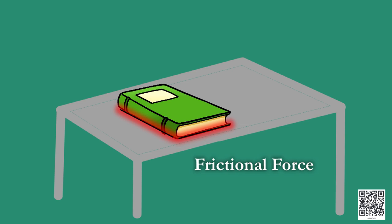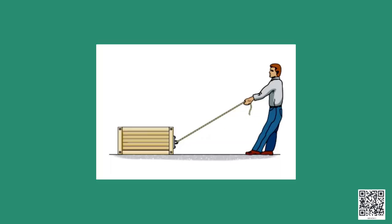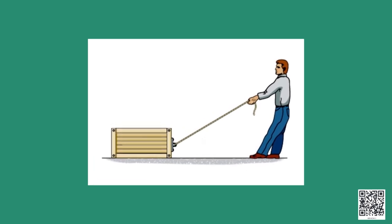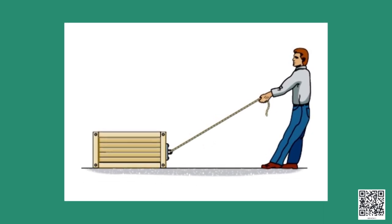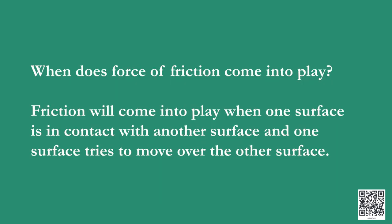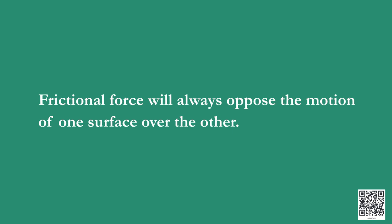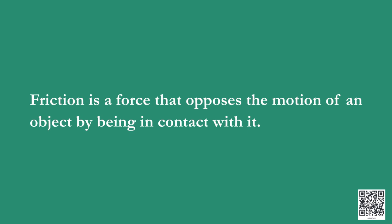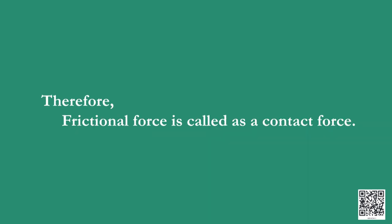The book is in physical contact with the surface of the table. Consider a box being pulled on the floor — why is it difficult to pull it? The force that opposes the motion of the box on the floor is also due to frictional force. Friction comes into play when one surface is in contact with another and one surface tries to move over the other. Frictional force always opposes the motion of one surface over the other. Therefore, frictional force is called a contact force.